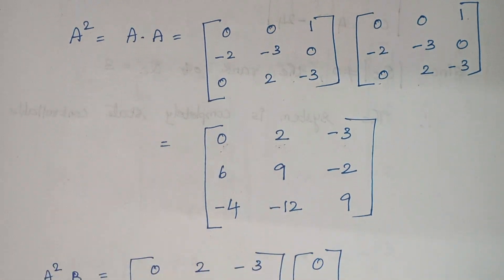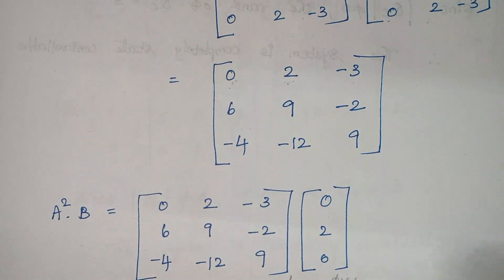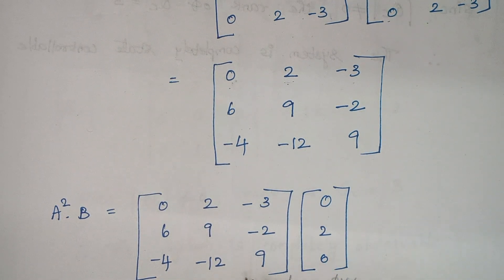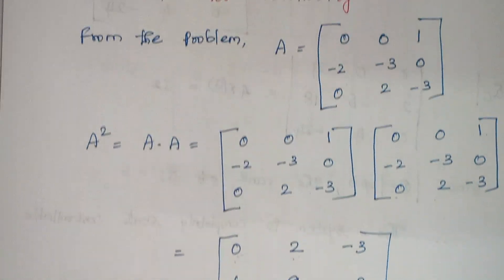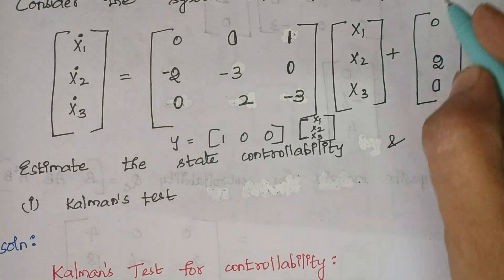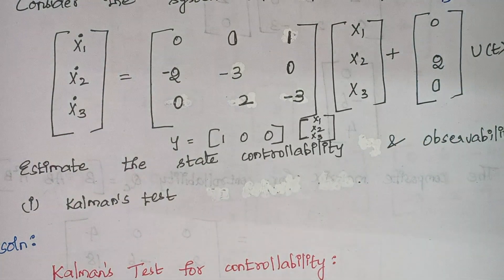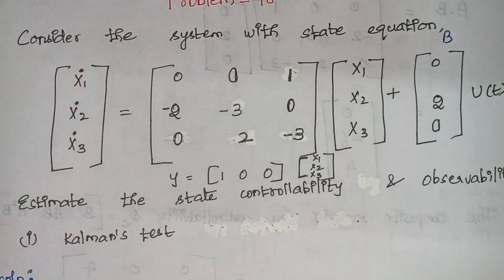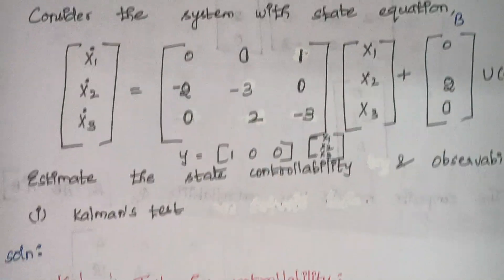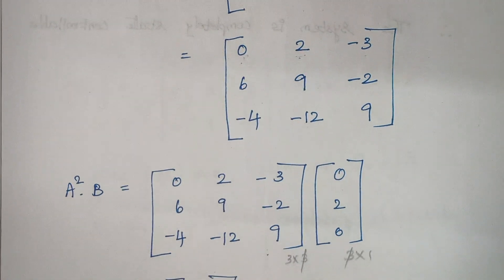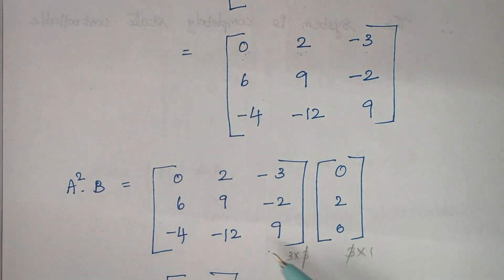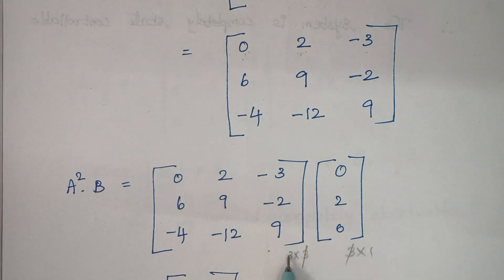The next step is A squared into B. We just calculated the value of A squared, and now A squared gets multiplied by B. B is given in the problem — this is your B matrix. Take these values and substitute them. So A squared times B: we now have to multiply. This is a 3×3 matrix and this is a 3×1 matrix.